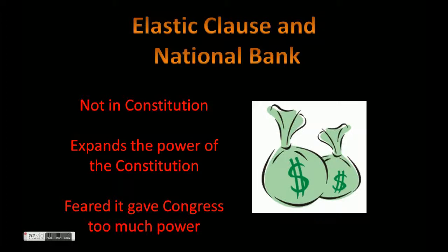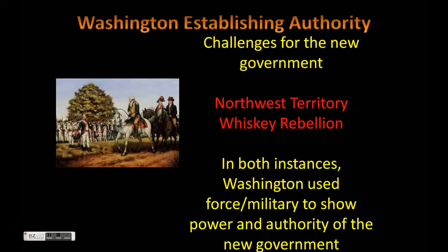Creating the National Bank started causing some problems because there is nothing in the Constitution that says you have the authority to create a bank. What Hamilton was doing is asking Congress to expand their own powers, yet he argued it is in the Constitution with the necessary and proper clause — Clause 18 of Article 1, Section 8. Many people feared this would give Congress too much power, because if they started taking powers not listed in the Constitution, where would they actually stop?